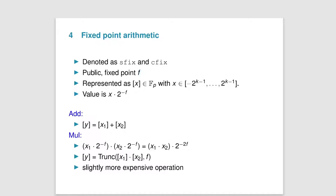We also have a public f to represent the fixed-point arithmetic, and the associated value is x times 2 to the minus f. So you basically take your x and you shift it by f bits to the right.